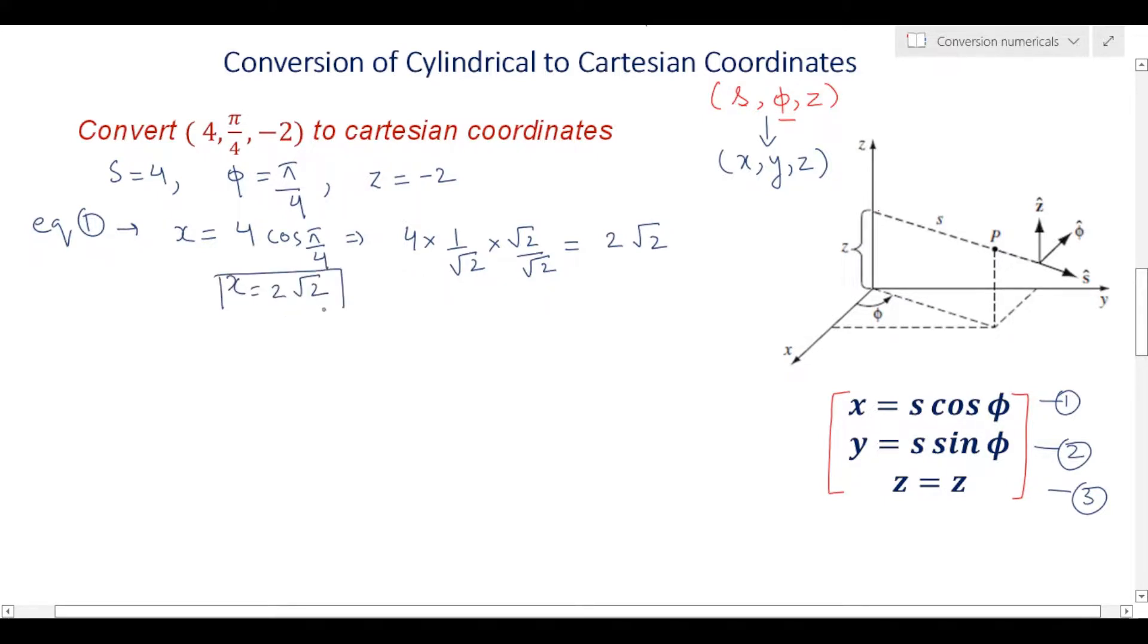For y we will use equation number two to find the second coordinate in Cartesian, which is s sin phi. S is 4, sin(π/4). Here coincidentally your sin(π/4) is also 1/√2, so again you will get the same point, 2√2. So your y is 2√2 only.